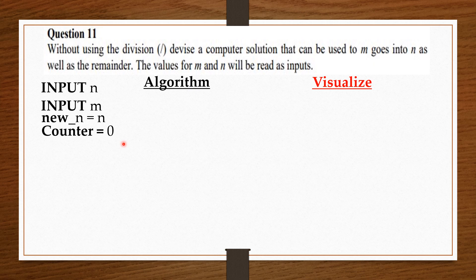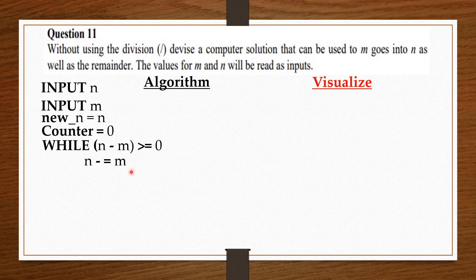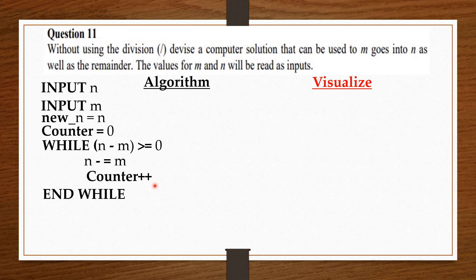The idea we are going to use in solving this problem is that we are going to keep on subtracting m from n until we get zero or a number less than m. So, we say: while n minus m is greater than or equal to zero, n minus equals m — that is, subtract m from n — and counter plus plus, that is, any time you subtract m from n, increase counter by 1. End while. By the end of the while loop, the value of n will be the remainder. So, we say remainder equals n.